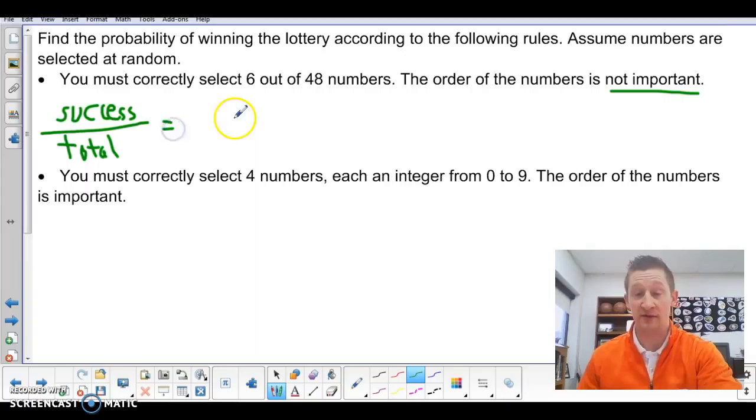So first of all, with success, to select the correct 6, there's only one way to do that, pick out the right numbers. So there's one successful outcome, win the lotto. Total, now here's where it gets a little tricky. I've got 48 numbers that I'm choosing from and I'm going to choose 6 of them. Order is not important.